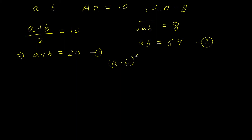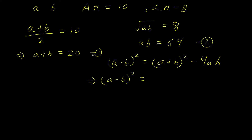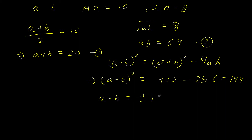A useful formula: (A − B)² = (A + B)² − 4AB. Substituting our values: (A − B)² = 400 − 4×64 = 400 − 256 = 144. Taking the square root: A − B = +12 or −12 (equation 3).